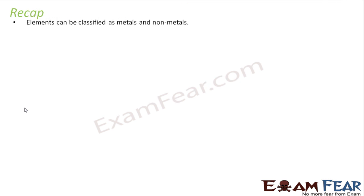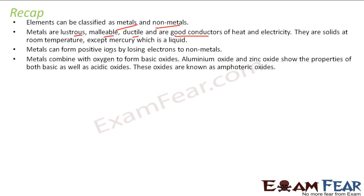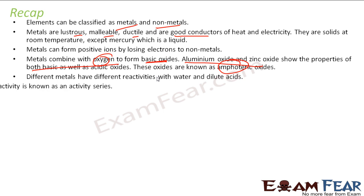Let us do a recap of what we have learned. Elements can be classified as metals and non-metals. We have metals and non-metals. Metals are lustrous, malleable, ductile, good connector of heat and electricity. They are solids except mercury. Metals, they lose electrons to non-metals. Metals combine with oxygen to form basic oxide. For example, aluminum oxide, zinc oxide are example of oxides which show both acidic and basic and they are called amphoteric oxide. They are exceptions actually.